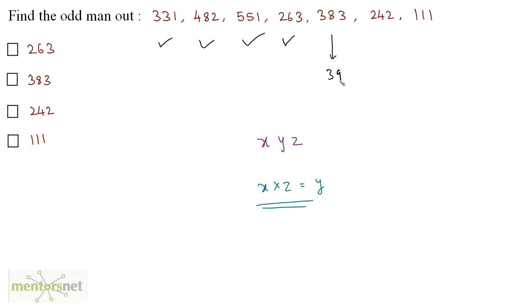This should be basically 393 and that is not the case. So 383 is the odd man out. What is the case with 242? 2 times 2 is 4. So this is correct. And 1 times 1 is 1. So this is also correct. So the answer is option B.